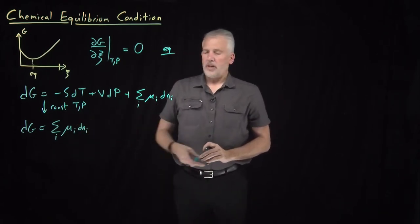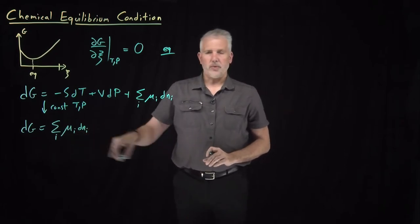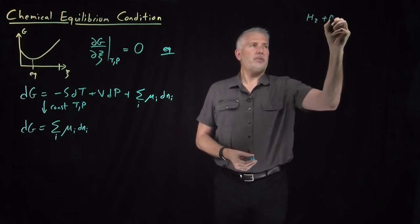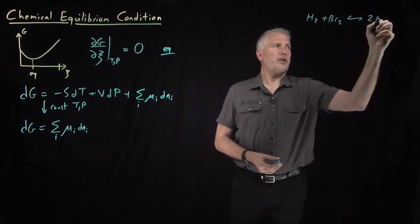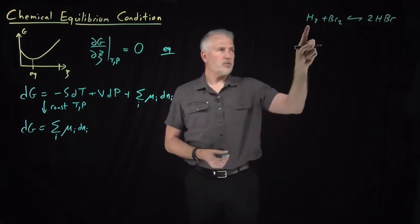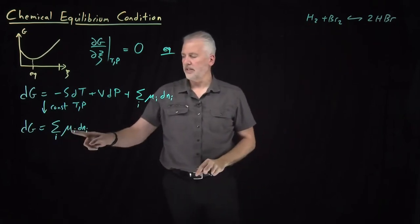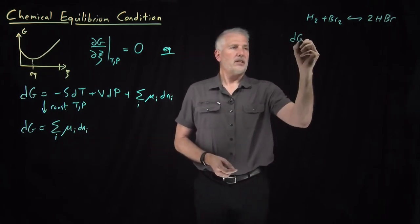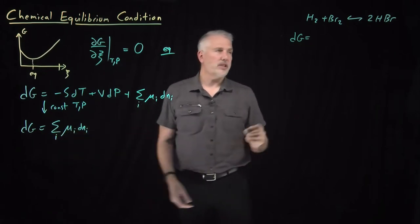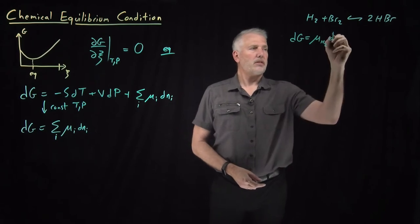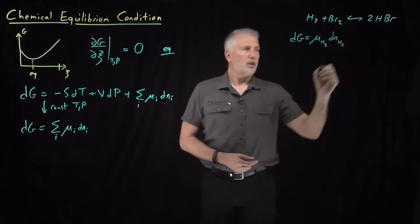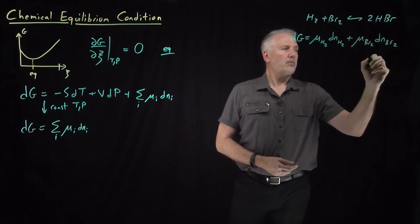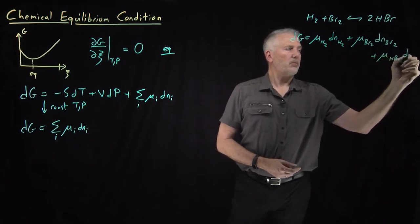Let's see what this looks like for an actual chemical reaction to make sure we understand what that equation means. If we stick with our chemical reaction H₂ + Br₂ → 2HBr, the species are H₂, Br₂, and HBr. This sum over species of chemical potential times change in number of moles gives: dG = μ(H₂)·dN(H₂) + μ(Br₂)·dN(Br₂) + μ(HBr)·dN(HBr).